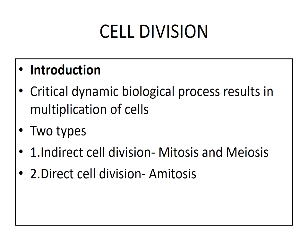There is a difference between cell division in unicellular and multicellular organisms. In unicellular organisms, it leads to reproduction or multiplication of cells, but in multicellular organisms, cell division results in increasing the number of cells that form an organ or entire body. Cell division is of two types: the first is indirect cell division.